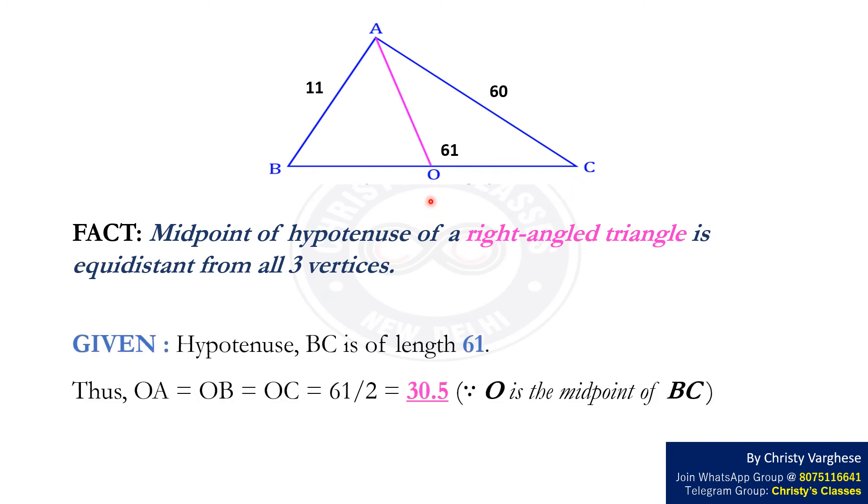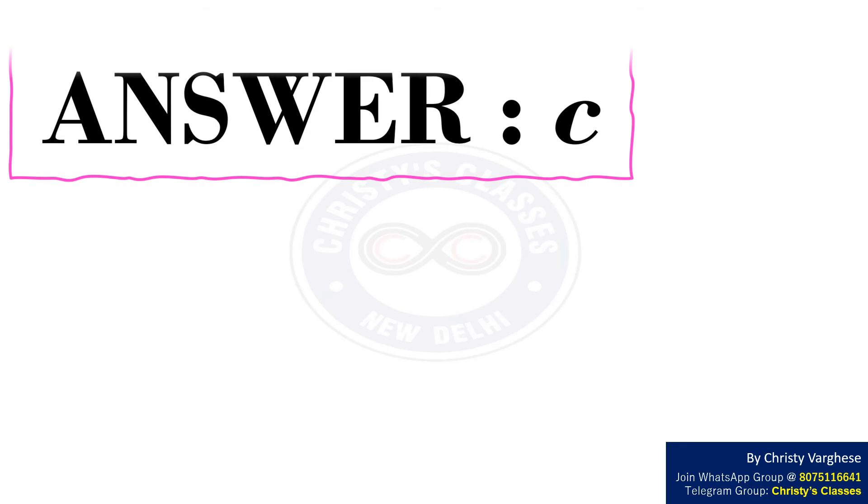Since O is the midpoint of BC, OA equals OB which equals OC which equals 61 by 2, that is 30.5. Hence, the right answer to the question is option C.